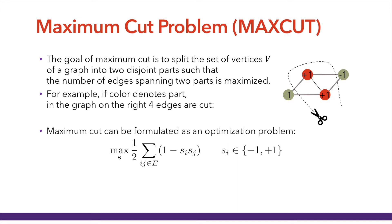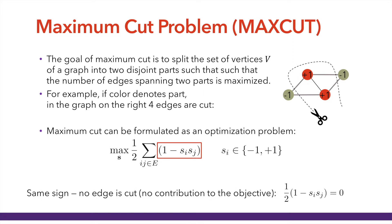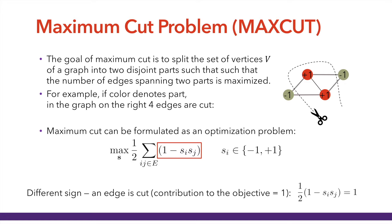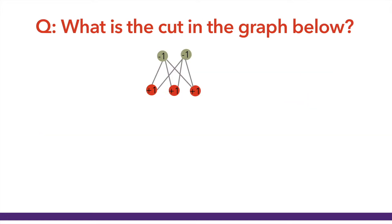It's easy to see that this is a correct formulation. Just look at this term: if the two variables are in the same part — same sign — then this term has no contribution to the objective. The objective is zero from this edge. Whereas if they have different signs, then it is one minus minus one, so the contribution is one — the edge is cut. Once you sum over all edges, you get your cut. For example, in this bipartite graph with two nodes in one part and three in the other, all six edges are cut.